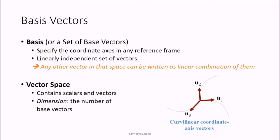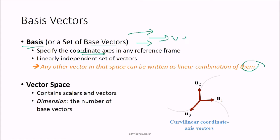Basis vectors (or a set of base vectors) specify the coordinate axes in any reference frame. They are a linearly independent set of vectors, so any other vector in that space can be written as a linear combination of them — for example, v3 can be written as a combination of v1 and v2. A vector space can contain scalars and vectors, and its dimension equals the number of base vectors.